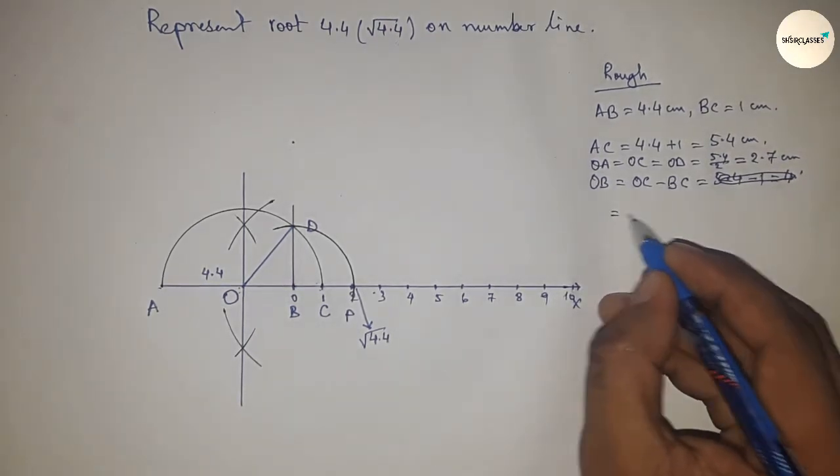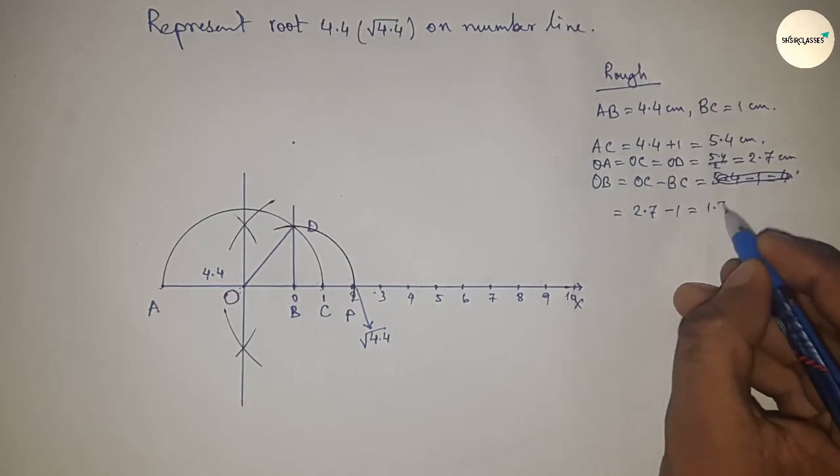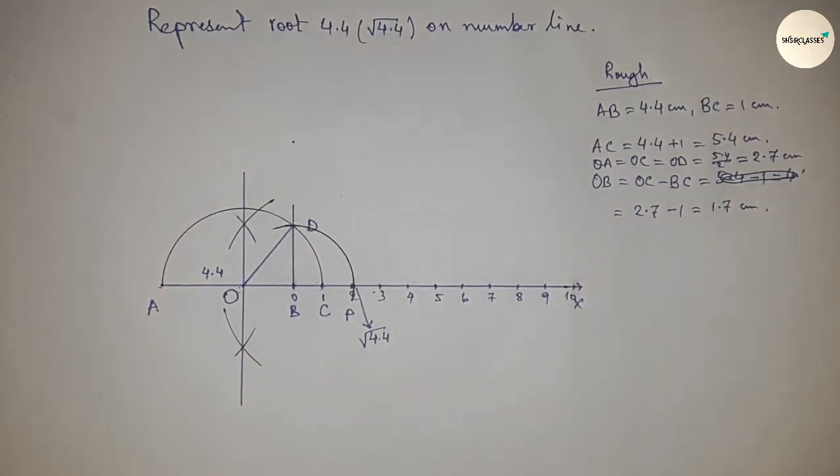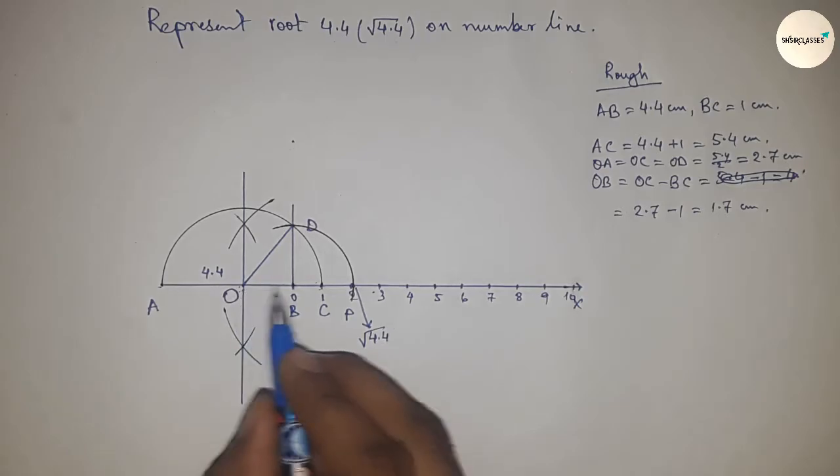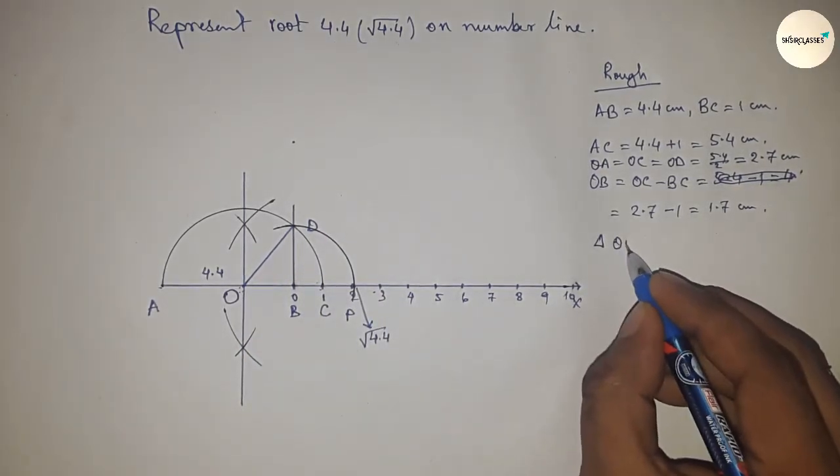So this is 2.7 minus 1, so 1.7 centimeter. From right angle triangle OBD we can write...